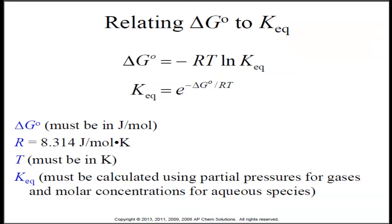Now we're going to relate delta G to KEQ. We have this equation: delta G equals negative RT ln KEQ. That equation has always been given on the AP exam and is used to solve for all variables except KEQ. The second rearranged version lets you solve for KEQ, but it has not been given on the AP exam, so you either have to memorize it or know how to rearrange the first equation. Note the units: delta G is joules per mole, R is 8.314 joules per mole Kelvin, T must be in Kelvin, and KEQ is calculated using partial pressures and molar concentrations.